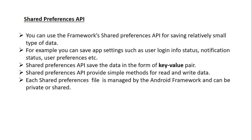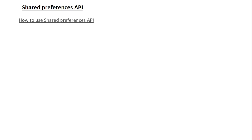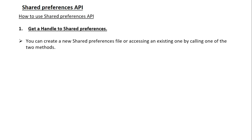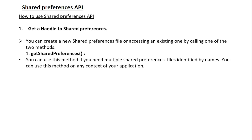Now we can learn about how to use the SharedPreferences API in your Android application. The first step is to obtain a handle to the SharedPreferences. You can create a new SharedPreferences file or access an existing one by calling one of two methods. The first method is getSharedPreferences — use this method if you need multiple SharedPreferences files identified by names. You can use this method on any context of your application.